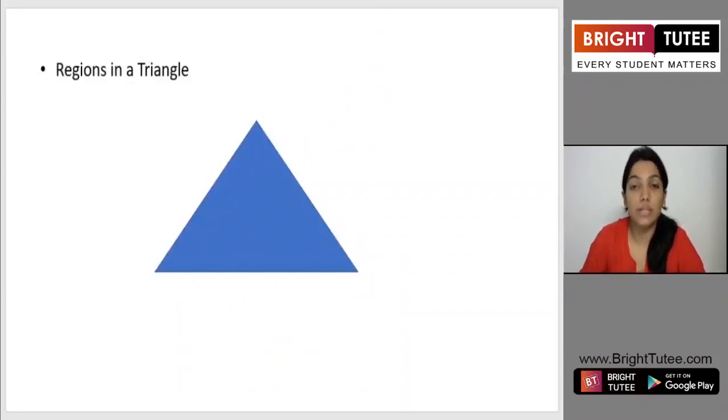Now moving forward, let us see the regions in a triangle. So here in front of you, you see a triangle which is colored in blue. Whichever area that you see which is in blue, it is the interior part of this particular triangle. So this is the interior part.